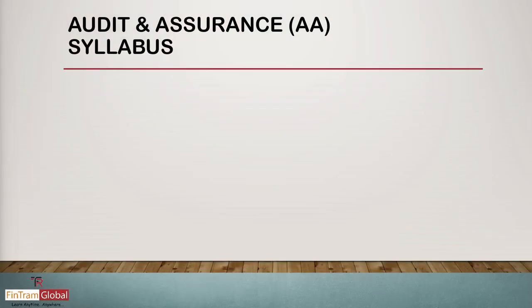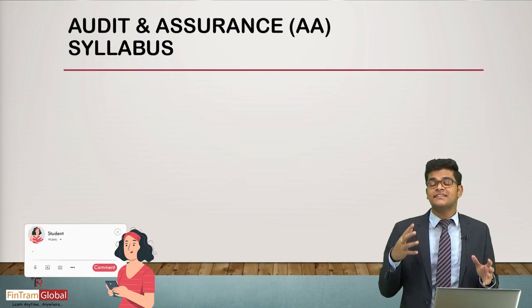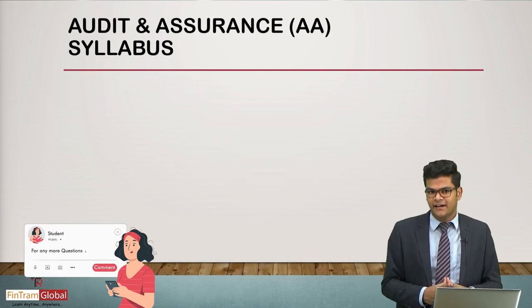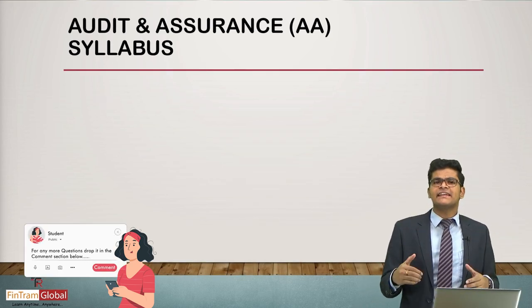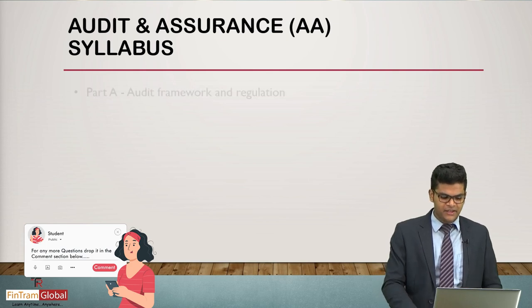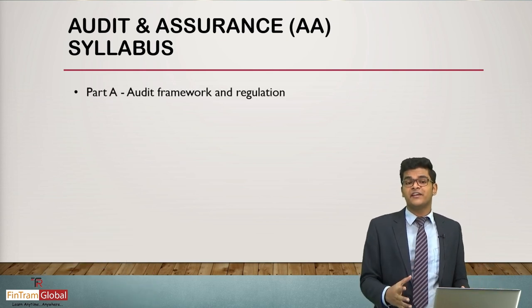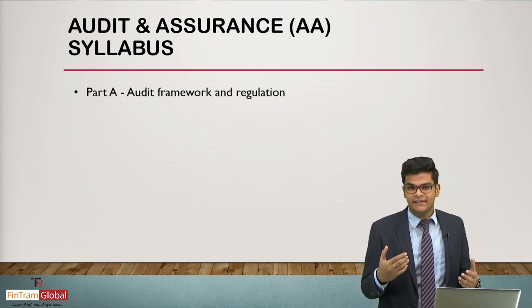When it comes to the syllabus of Audit and Assurance, what exactly are the syllabus areas? The overall Audit and Assurance syllabus is partitioned into six syllabus areas. Let's take a look at them one by one. First of all, we have Part A: Audit Framework and Regulation.